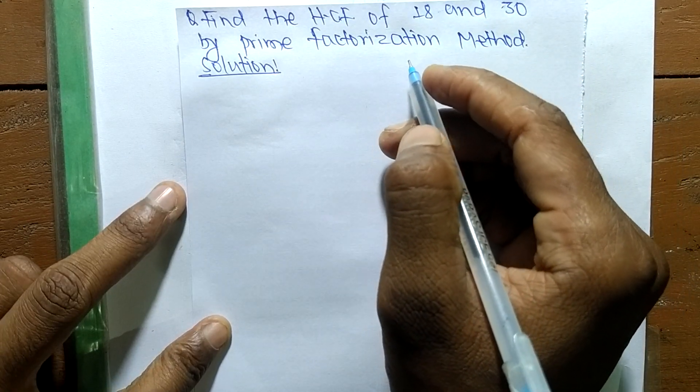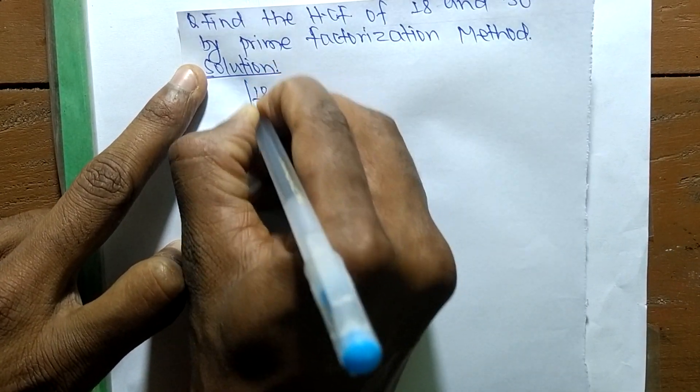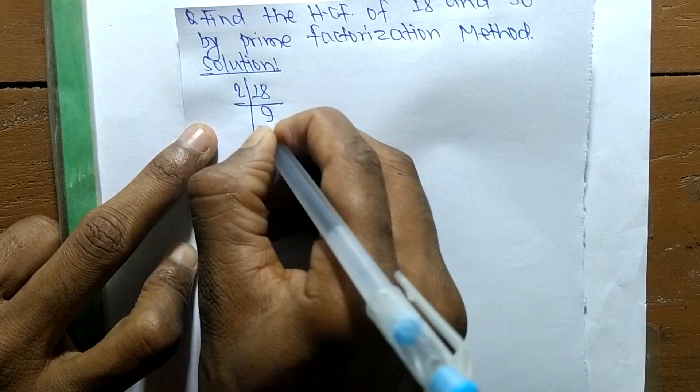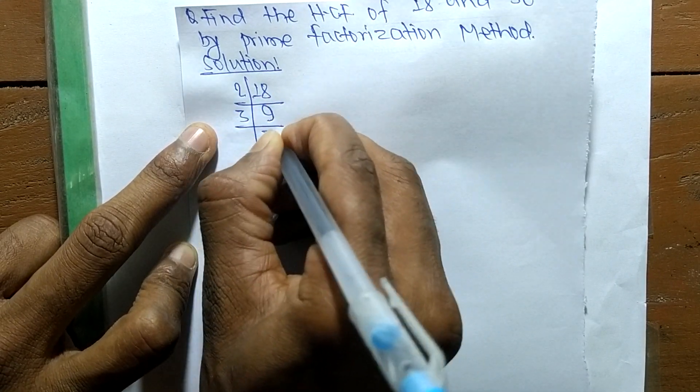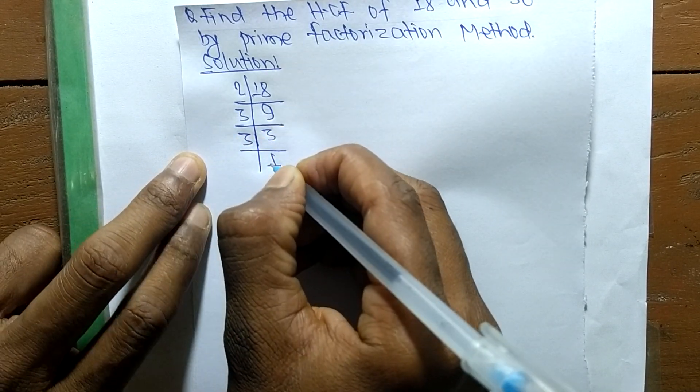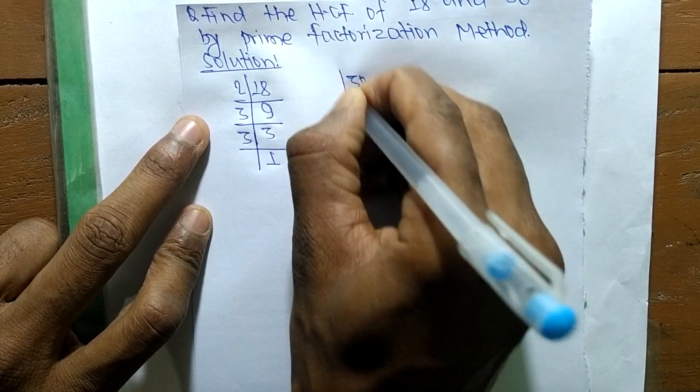First, we find the prime factors of 18. It is 2 times 9 equals 18, 3 times 3 equals 9, and 3 times 1 equals 3.